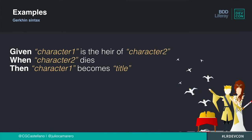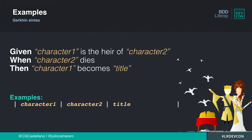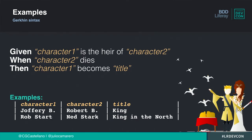Another very cool feature are the examples, because this allows you to define variables in the scenario and reuse it for different cases. For example: 'given character one is the heir of character two, then character one becomes title' — you have variables there. Then you define your examples table with those three variables: Geoffrey Baratheon the king, and Robert Stark, Ned Stark, king in the north. Only defining one scenario, you can put many different rows to see many different examples, so it's very fast to read and simple to understand.